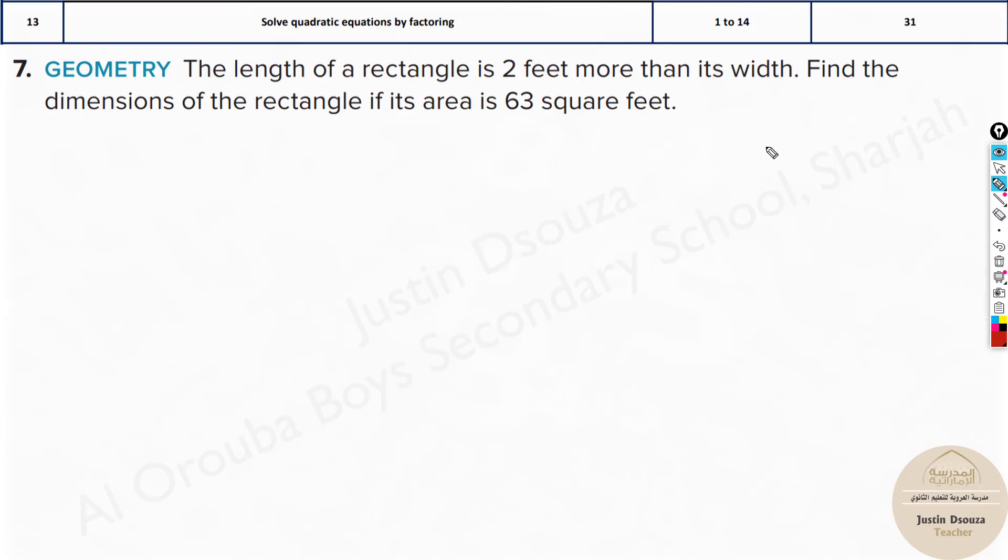Now we have a real world problem here. Similar problems were done in question number 12 as well. The length of a rectangle is 2 feet more than its width. Find the dimensions of the rectangle if the area is 63 square feet.